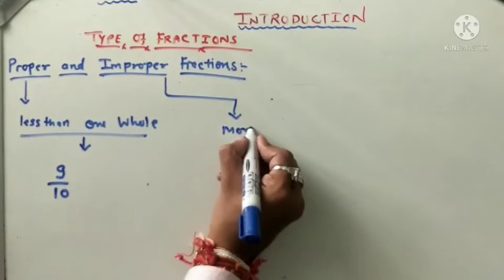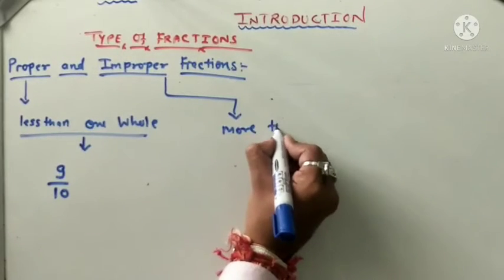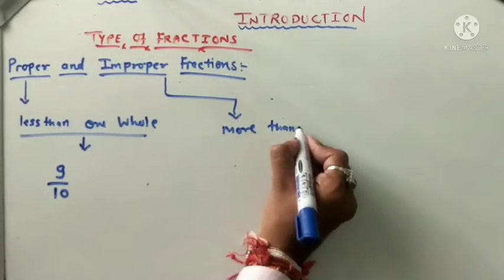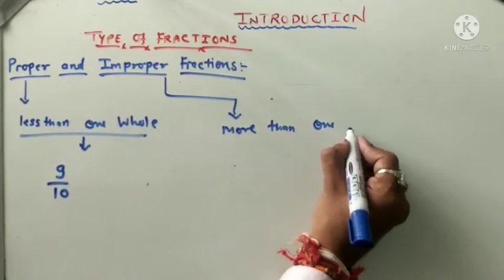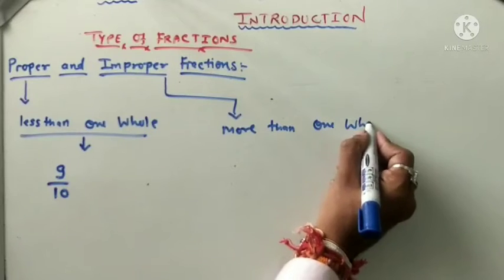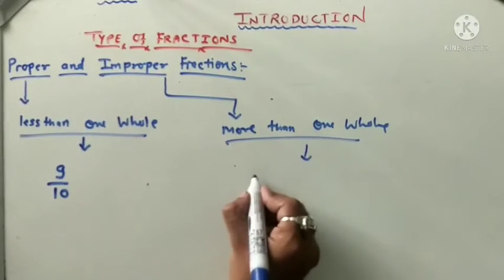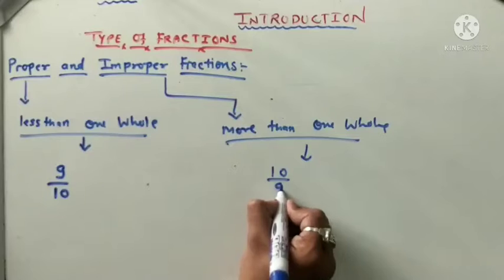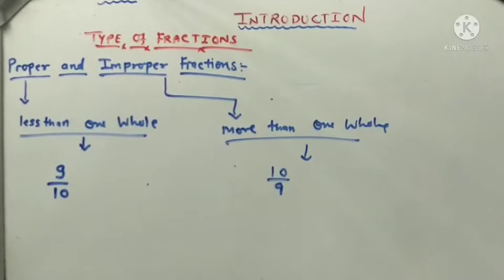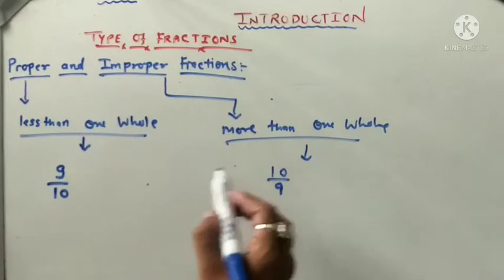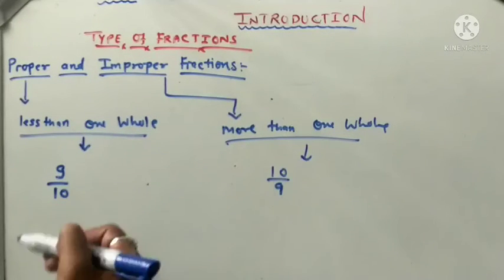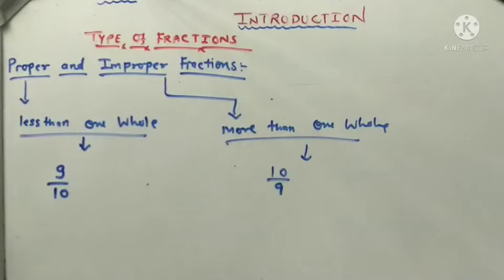So 10 upon 9 is more than one whole, and 9 upon 10 is less than one whole. This is how we understand proper and improper fractions.